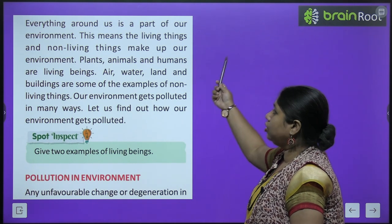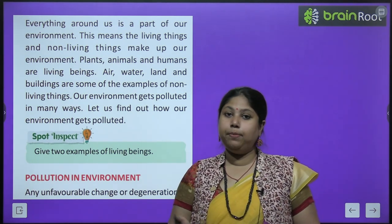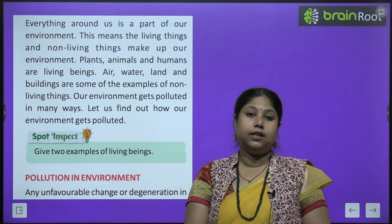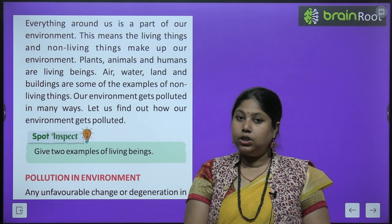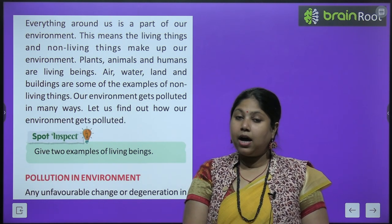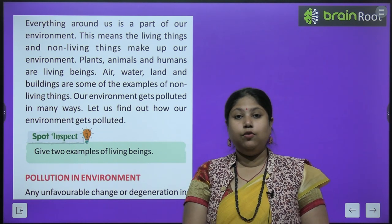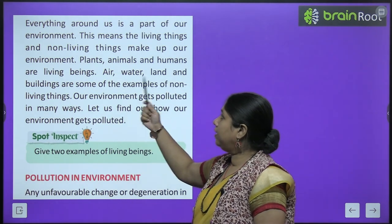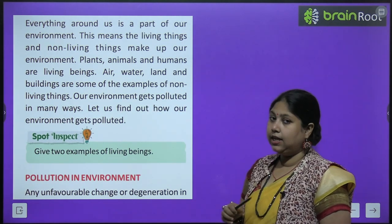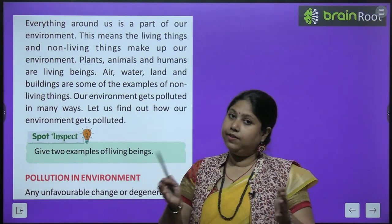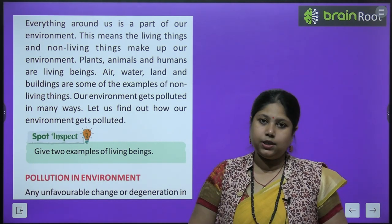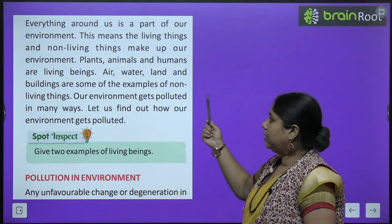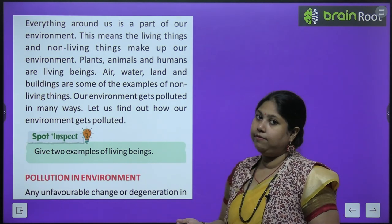Everything around us is a part of our environment — pair-paudhe, sardak, hawa, paani — all the things you see around us. This means the living things and non-living things that make up our environment. Plants, animals and humans are living beings. Air, water, land and buildings are some examples of non-living things.